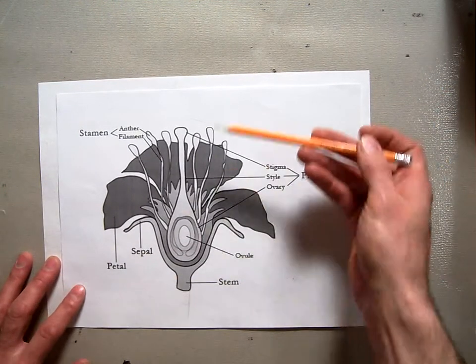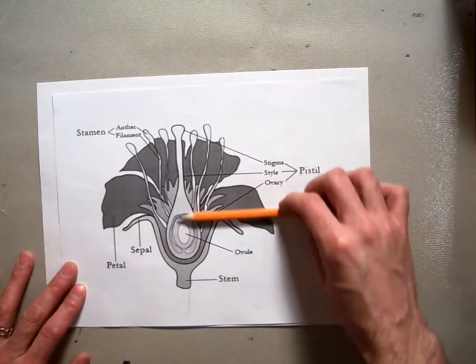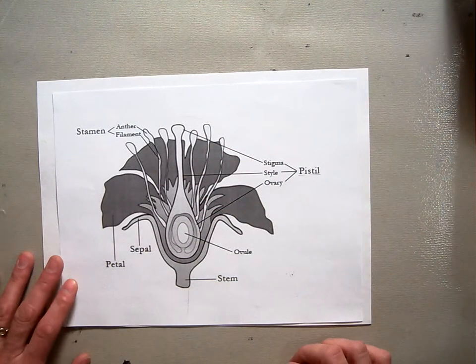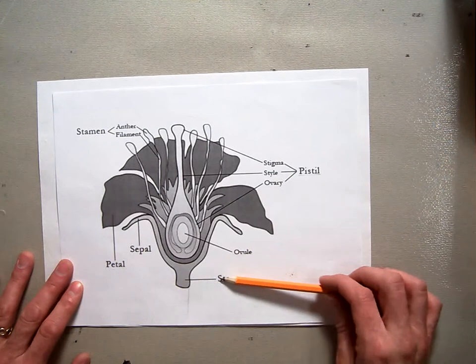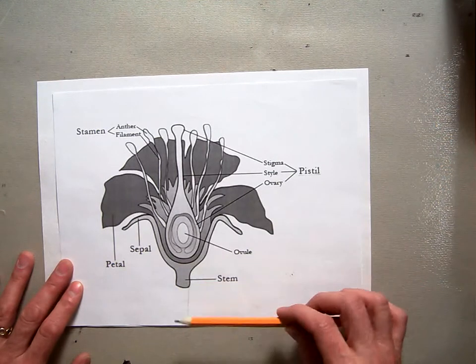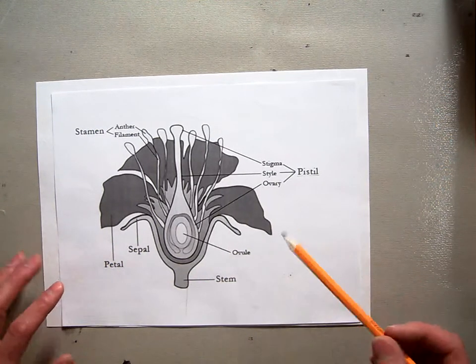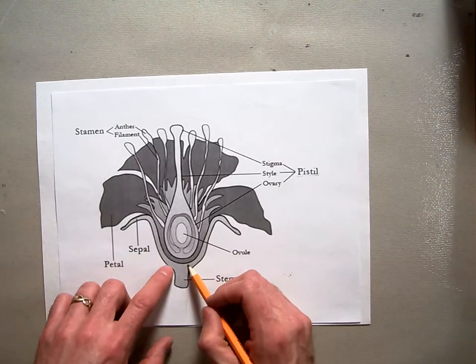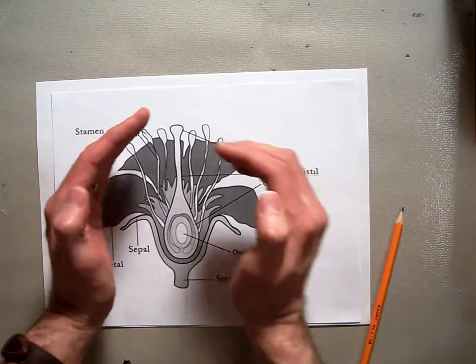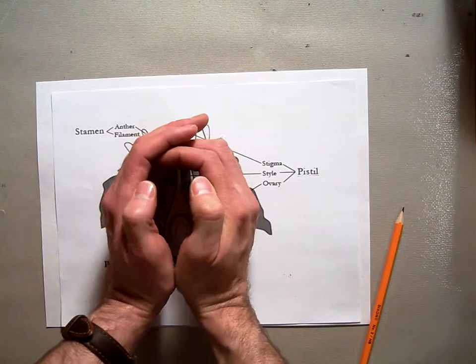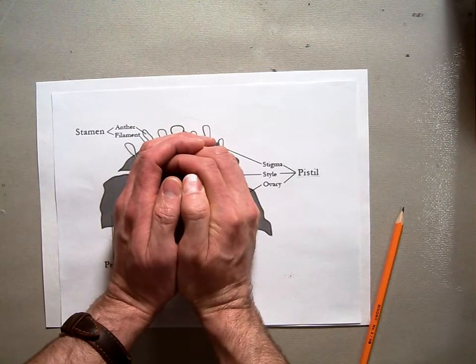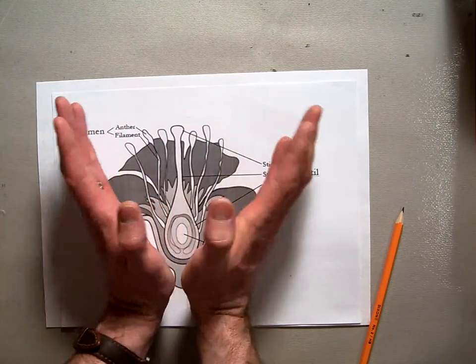So basically, if this is a flower, this is a cut-in-half cross-section of a flower. On the bottom, there's the stem, and you all know what that is. That's what holds the flower up. And then there's the sepal here, which is basically the green, usually green, little part that holds all of the stuff inside the flower before it opens up and blooms.